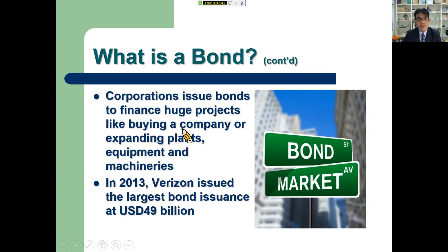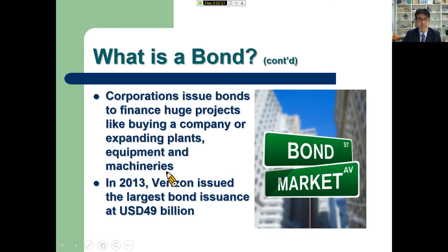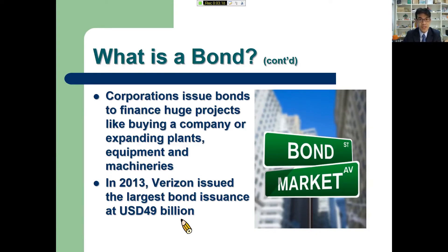Corporations issue bonds to finance huge projects like buying a company, expanding plants, buying equipment and machineries. For example, in 2013, Verizon Communications issued the largest bond in history, worth $49 billion. Imagine that — $49 billion. That's a lot.